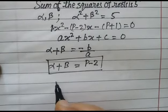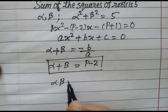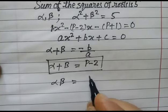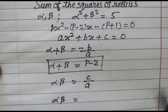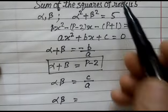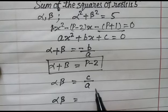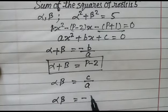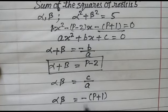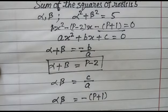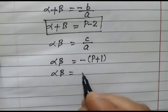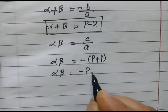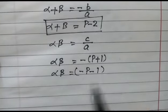And the product of the roots alpha·beta is equal to c/a. Here c is -(p+1) and a is 1, so alpha·beta = -(p+1), which is -p - 1.